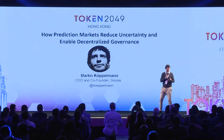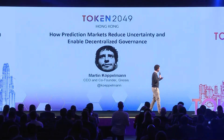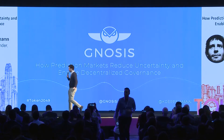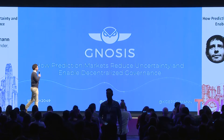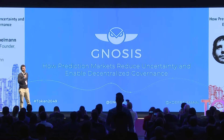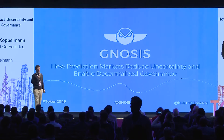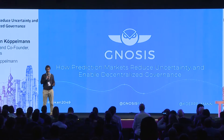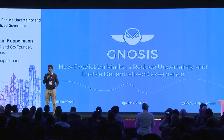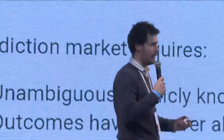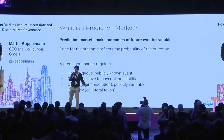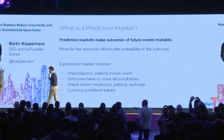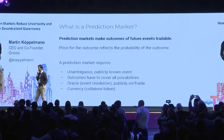I'm going to talk about how prediction markets can reduce uncertainty and enable decentralized governance. I'll start with three slides on what prediction markets are and what they are usually good for — primarily information gathering — and then go into those two use cases from the title.